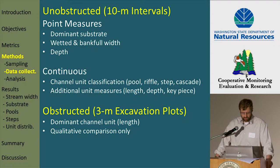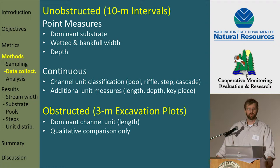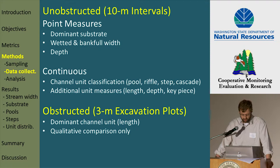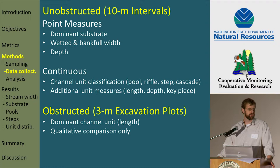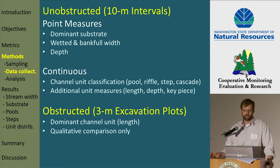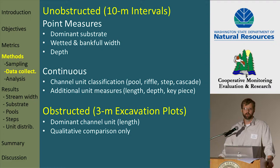We measured the dominant substrate and the bankful and wetted width and depth as point measures at the start of each of our 10-meter sample intervals. Our channel unit classification was a continuous classification covering the entire length as one of the four unit types. In the obstruction plots, our surveys were limited to an assessment of the most dominant channel unit type, because extracting all of that material impacted the stream dimensions and substrates in a way that we couldn't conduct the rest of the measures. The bulk of our analysis is focused on only the unobstructed portions of our sites.